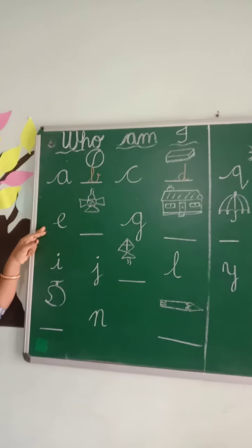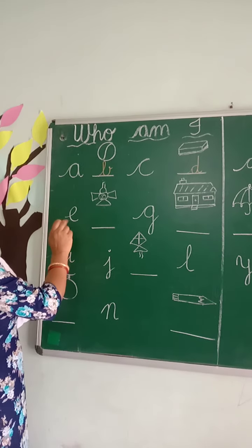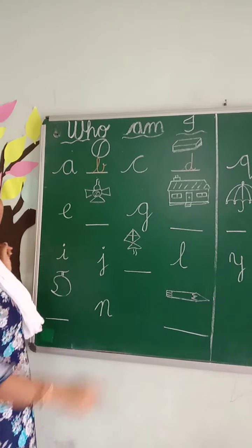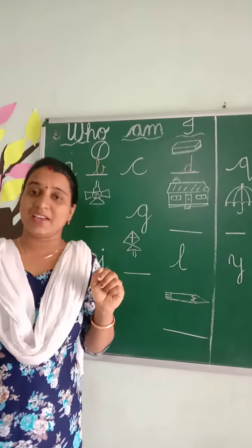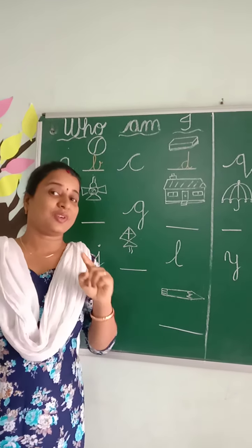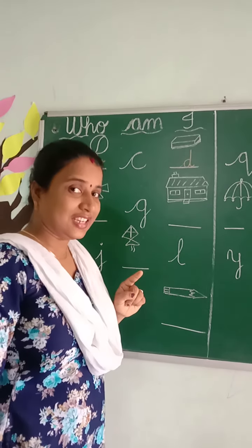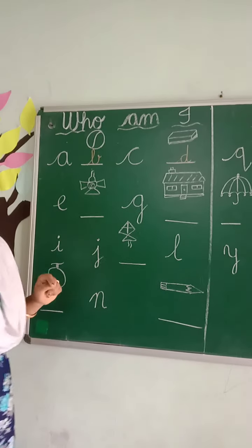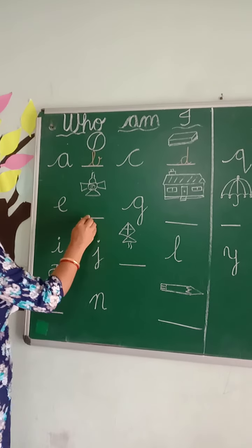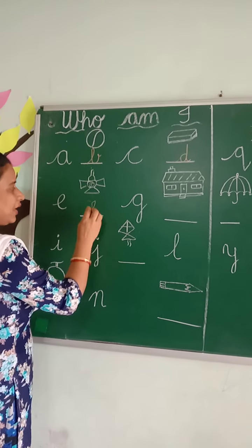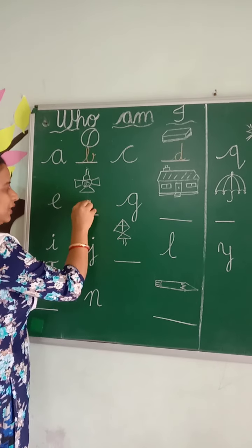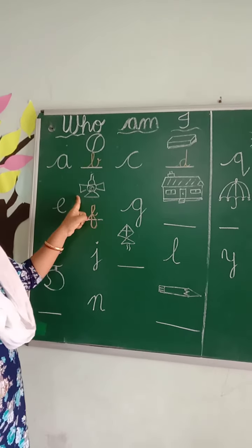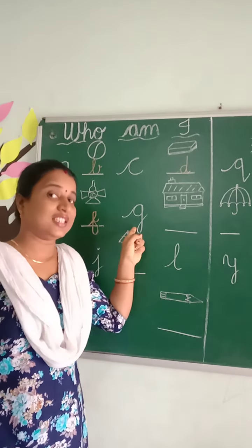Now let's come to the second line. It is small cursive E. Then which picture is this? It is a fan. Fan starts from which letter? It is F. F for fan.